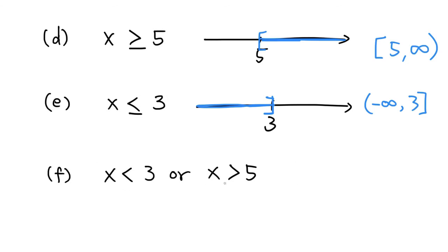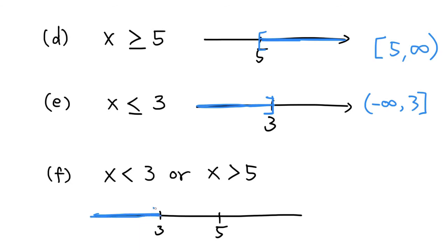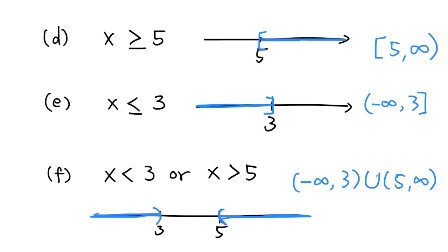In the next example, we have two inequalities: x less than 3 or x greater than 5. Drawing these on the number line, we have 3 here and 5 here. If x is less than 3, it's the interval on the left-hand side of 3. If x is greater than 5, x is on the right-hand side of 5. So it consists of two intervals: the left interval from negative infinity to 3, and the right interval from 5 to infinity. To say x is in the first interval or the second, we use the union symbol.